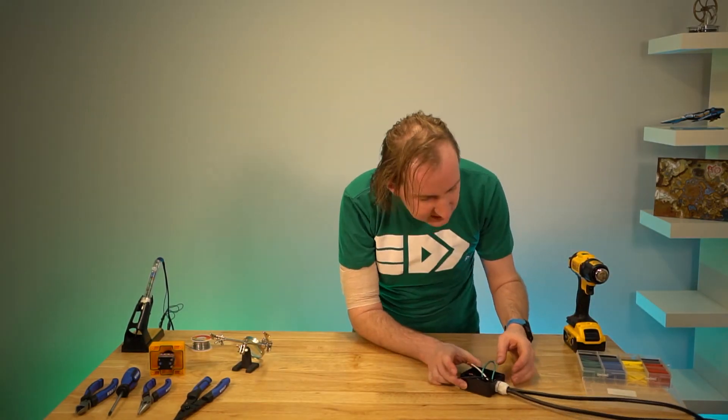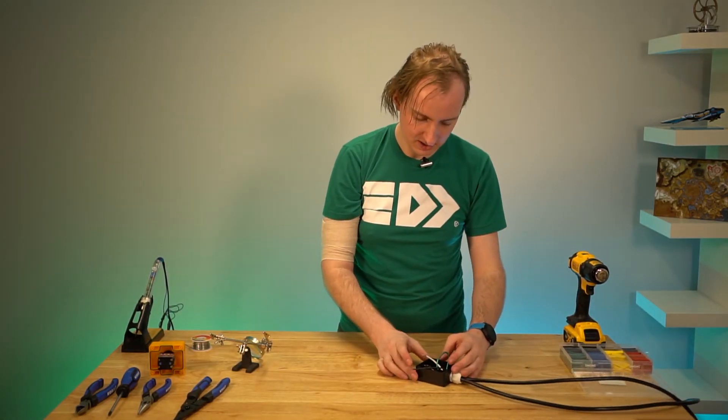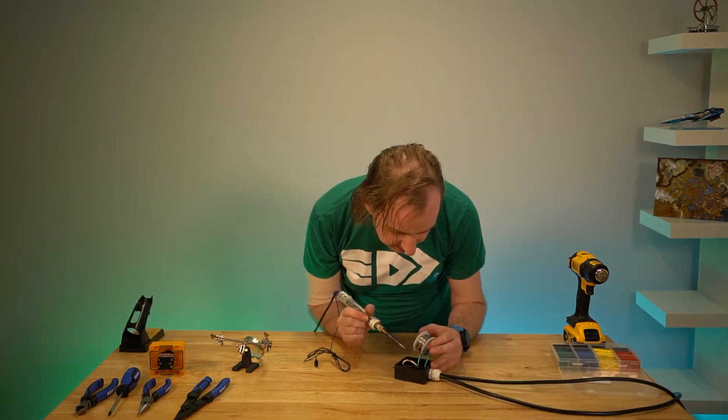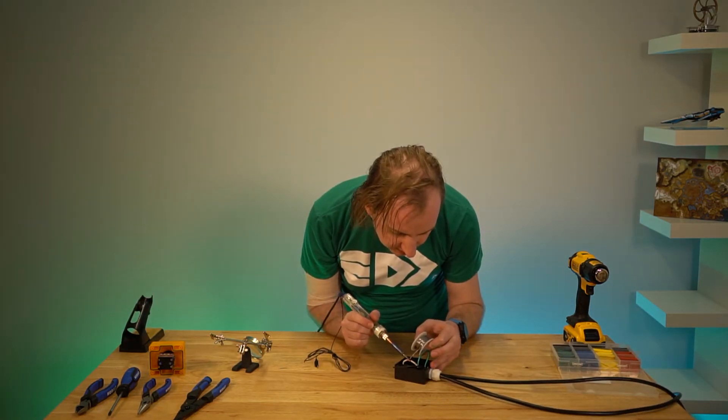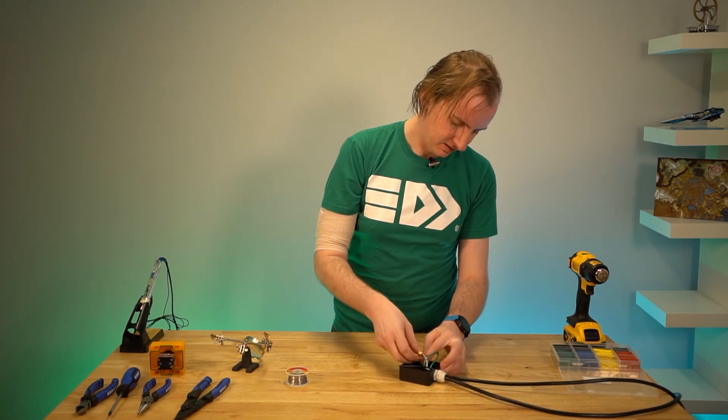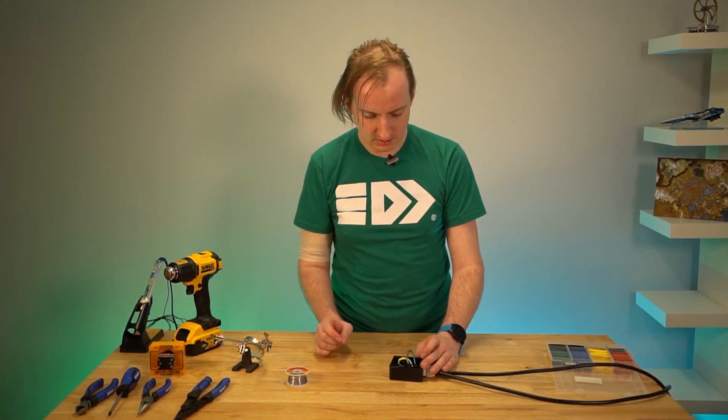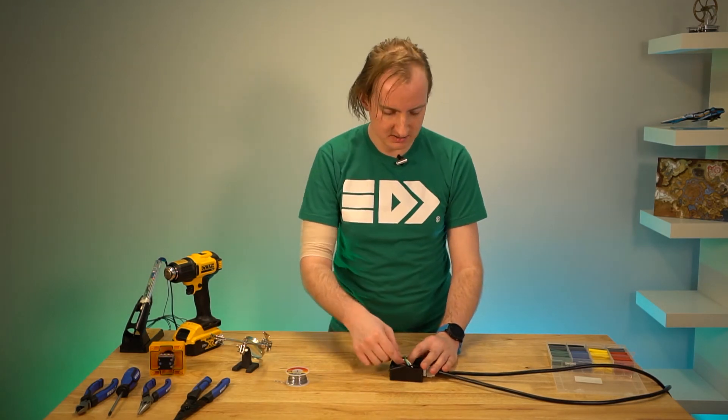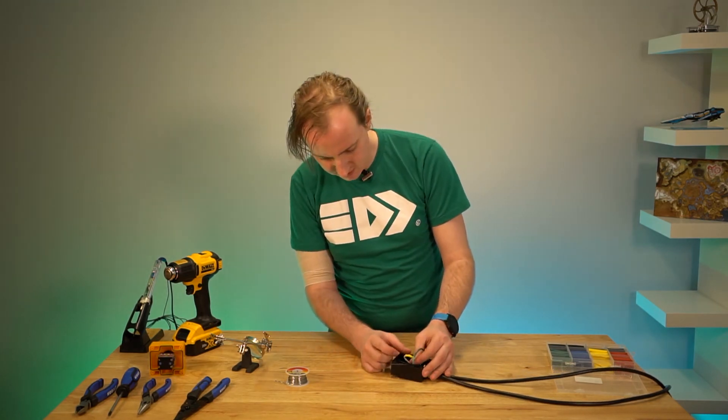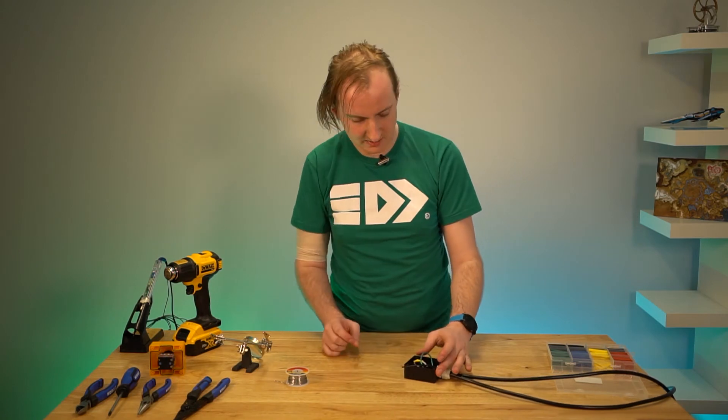That's shrunken nicely, so that's a good interleave connection. Same again for the neutral. Okay, cool. So those two are now both connected. They are insulated. There is no risk there of us getting any live AC out.